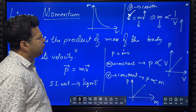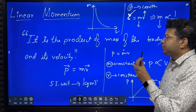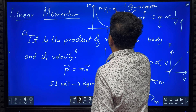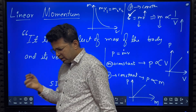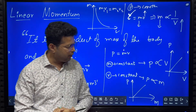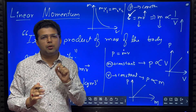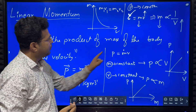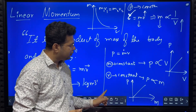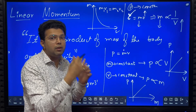When momentum is constant, say if there are two bodies, then I can write m1v1 is equal to m2v2. For this session, remember that p equals mass into velocity. If mass is constant, momentum is directly proportional to velocity. If velocity is constant, momentum is directly proportional to mass. If momentum is constant, mass and velocity are inversely proportional to each other.